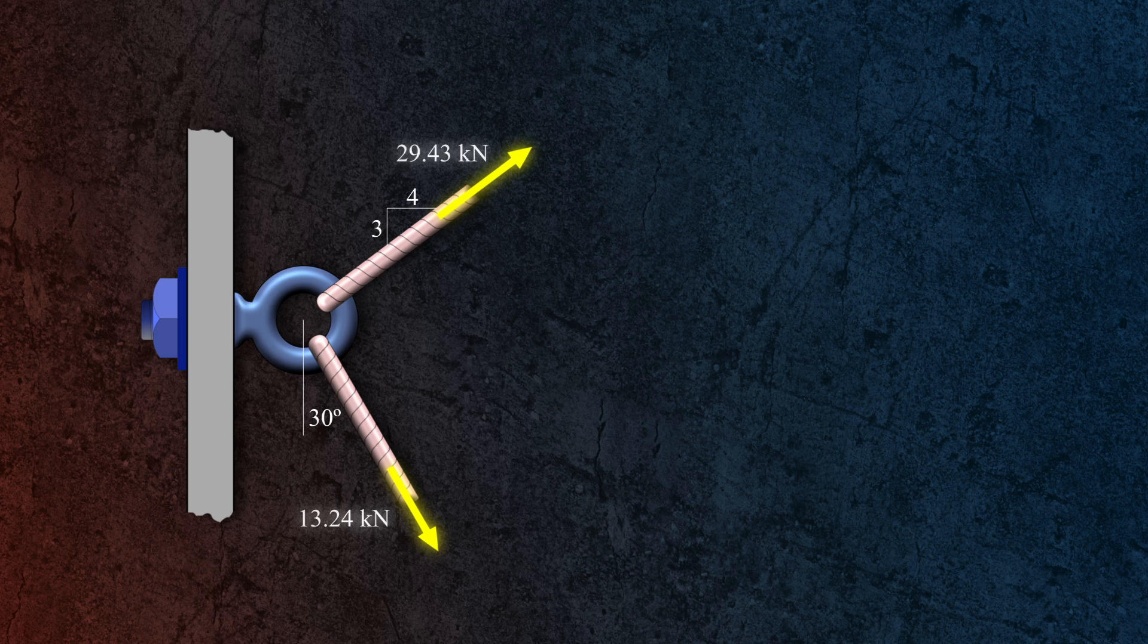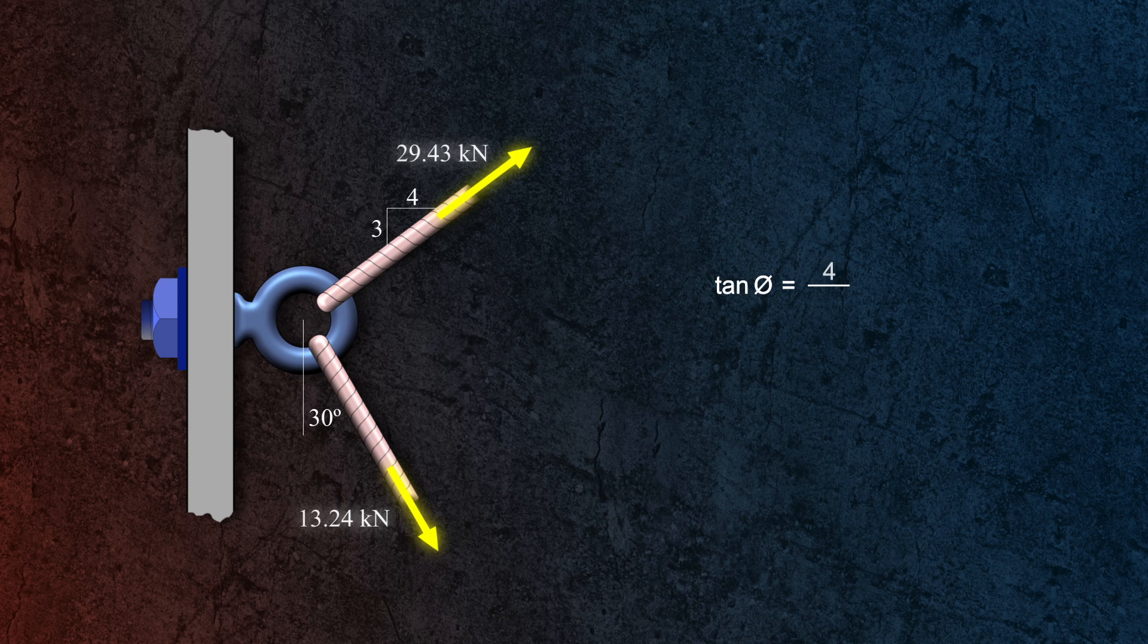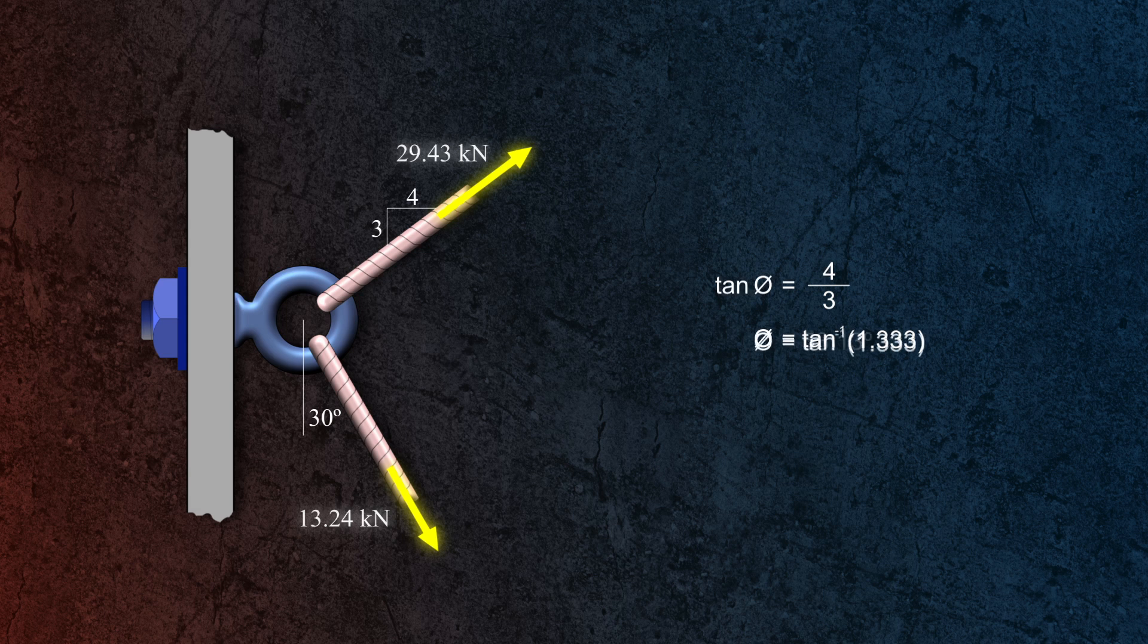Let's solve for the angle of the second rope. From the given slope of 4 is to 3, we can use the tangent function to solve for the angle. Tangent of theta is equal to the opposite side 4 divided by the adjacent side 3. So the angle will be arc tangent of 4 over 3, which is equal to 53.13 degrees.